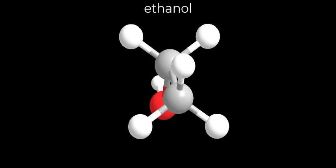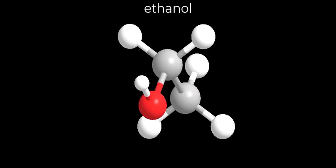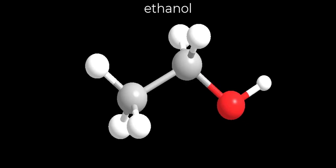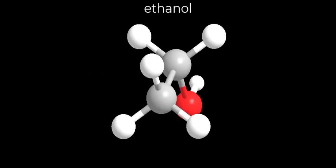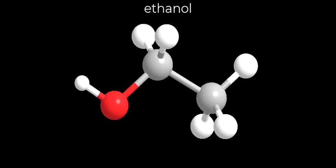We are now going to look at some virtual molecular models for part A. Here is the model for ethanol. Notice the red sphere stands for oxygen, the white spheres stand for hydrogens, and the grayer spheres stand for carbon atoms.